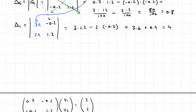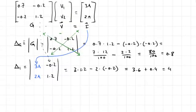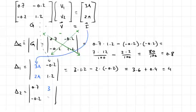And we'll repeat this one more time. Del 2. Now we're going to copy down the first column from G, and we will place the current vector in the second column, 3 and 2. So this is equal to 0.7 times 2 minus 3 times negative 0.2. In other words, 1.4 plus 0.6, or 2.